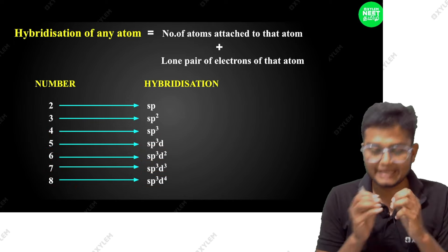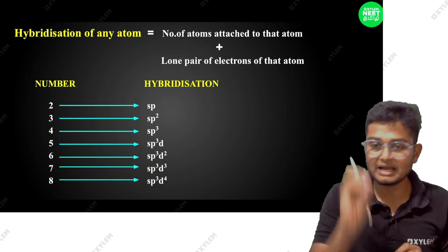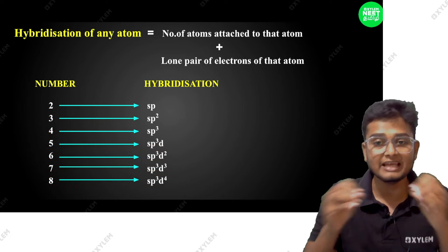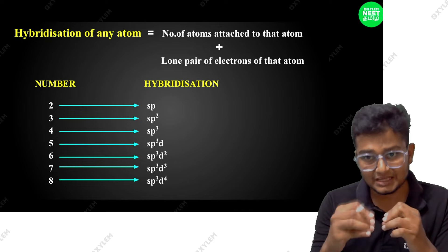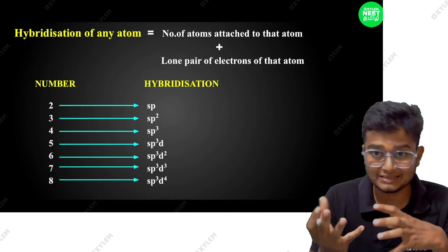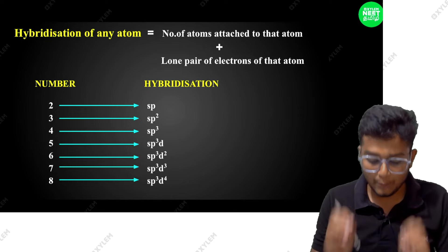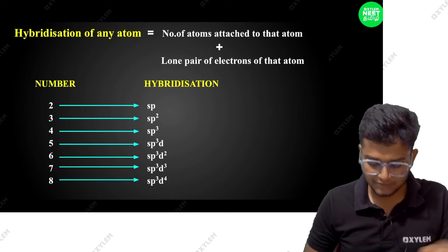So just look at the central atom — how many elements are attached to it, plus how many lone pairs it has. That is the trick.